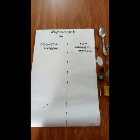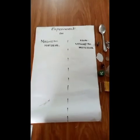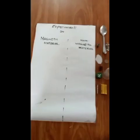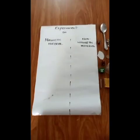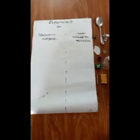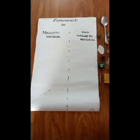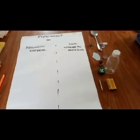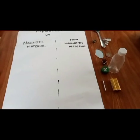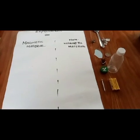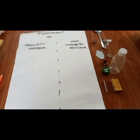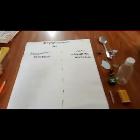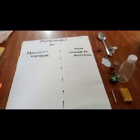Okay, so here we do an experiment on magnetism — magnetic and non-magnetic materials. How can we determine if a material is magnetic or non-magnetic? We can test if a material is magnetic by seeing if it is attracted to the magnet.